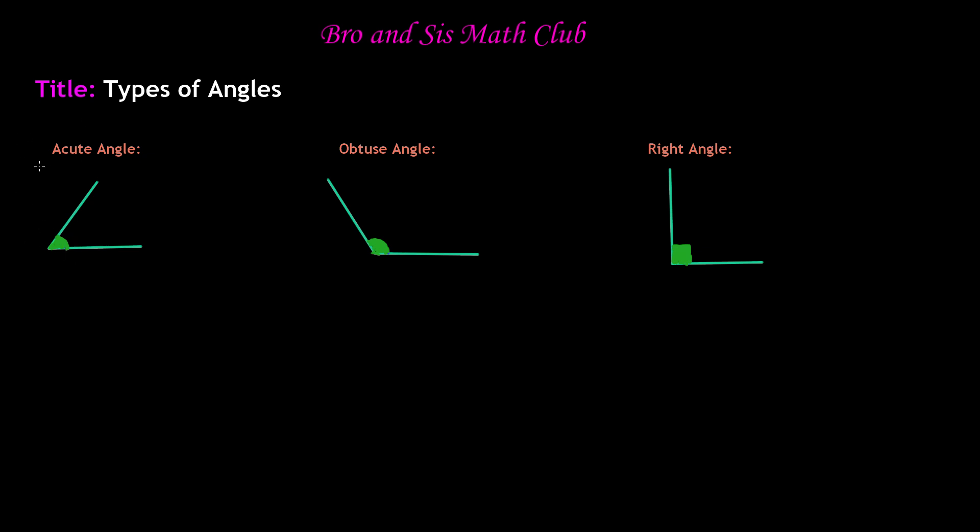So here if you take a look at the acute angle, this is the vertex, and these are the two straight lines. Then the obtuse angle, the common vertex, and then the right angle, the common vertex. So I've circled them so that you know which is the common vertex.